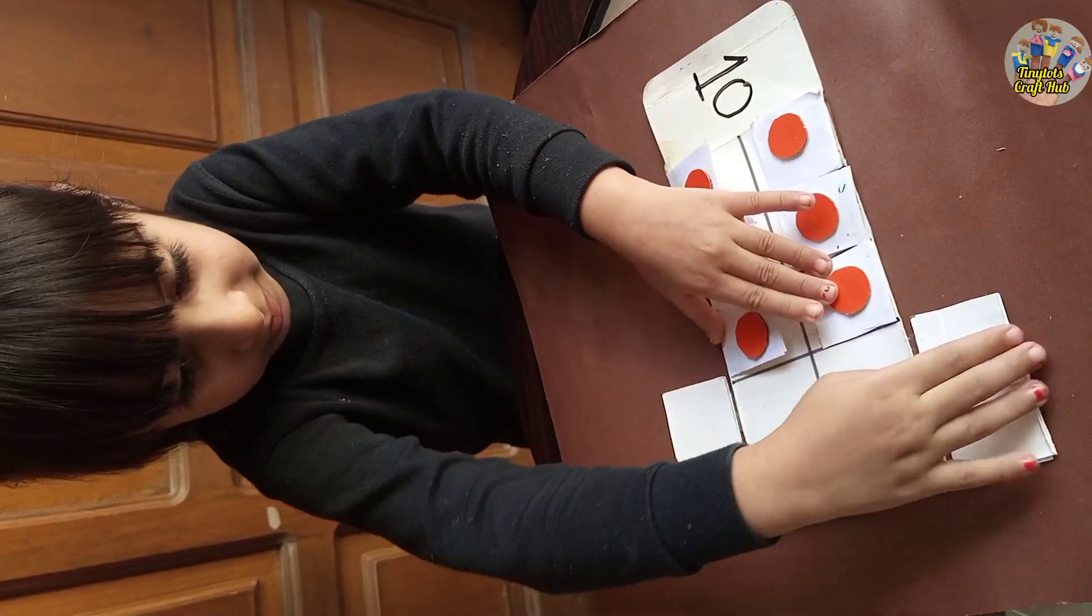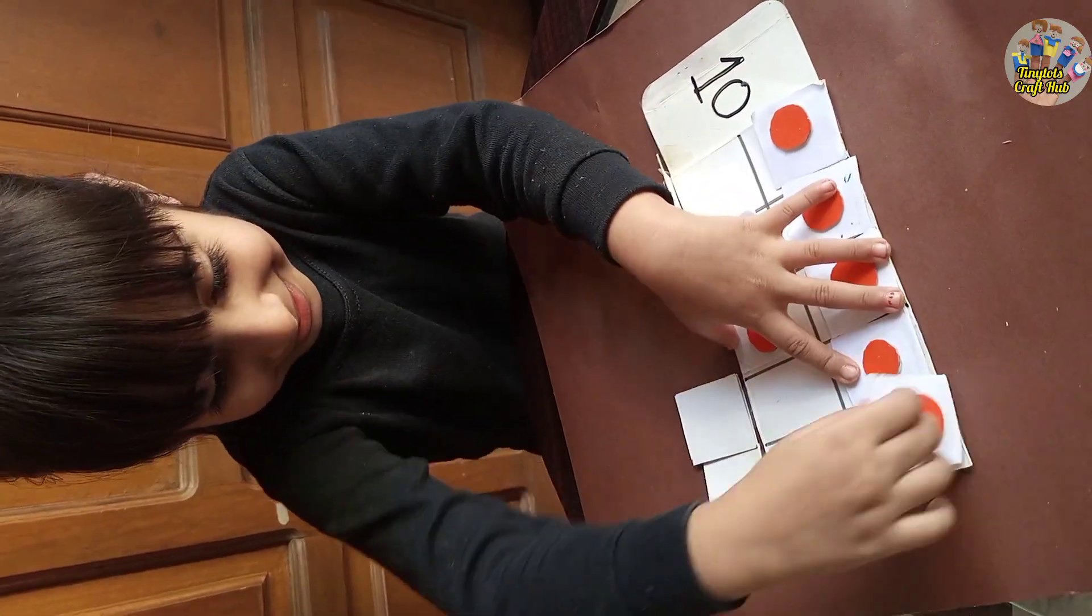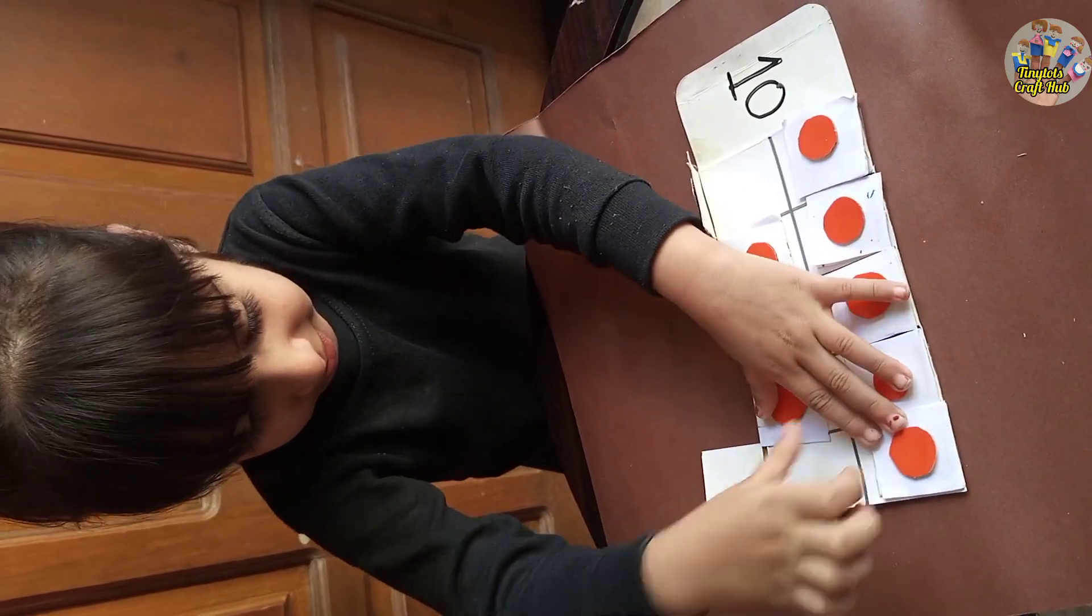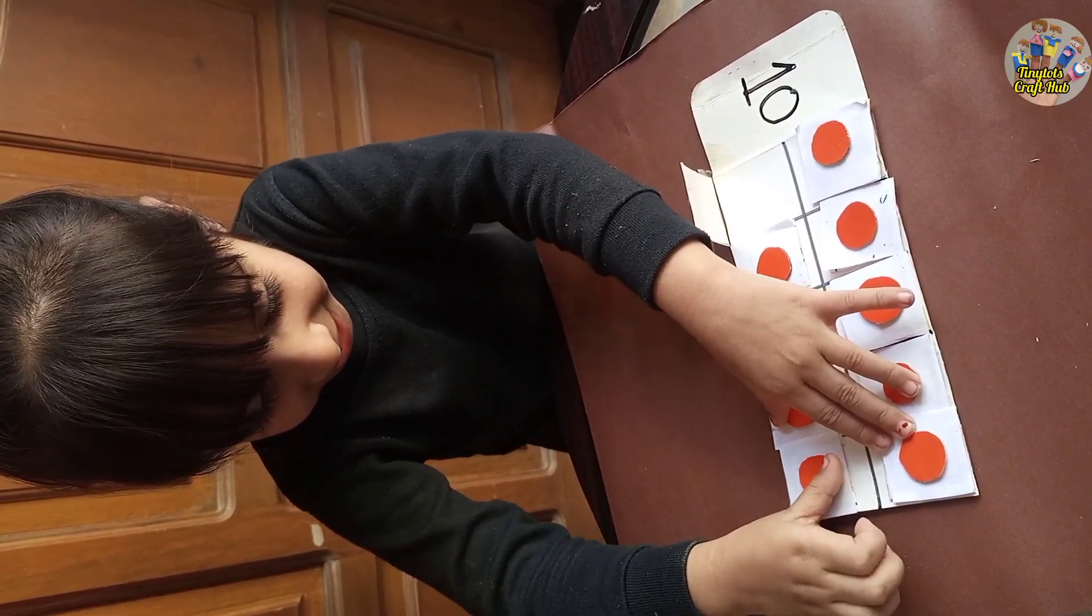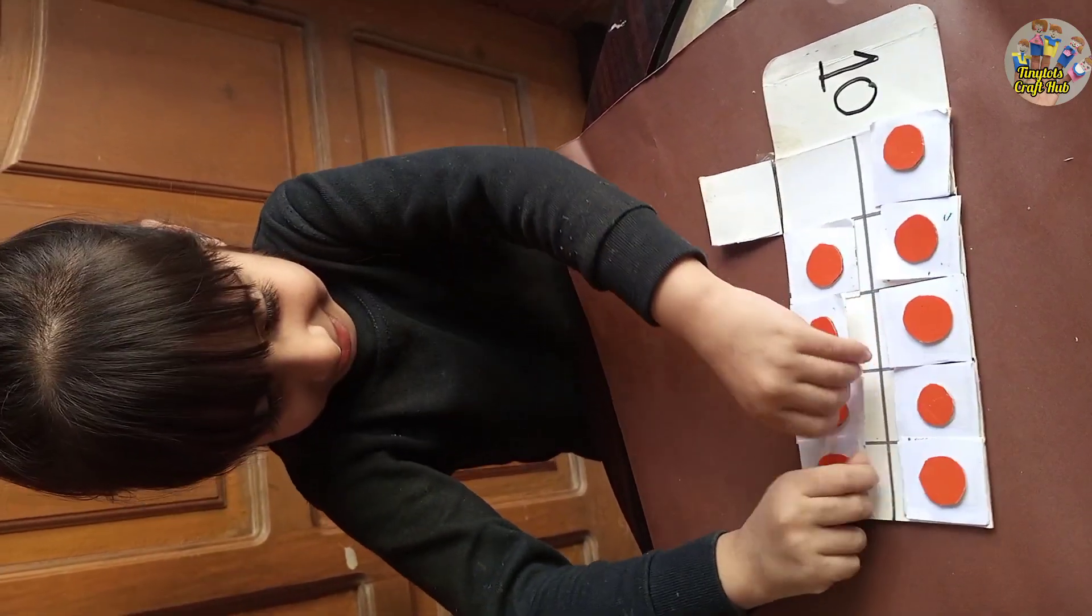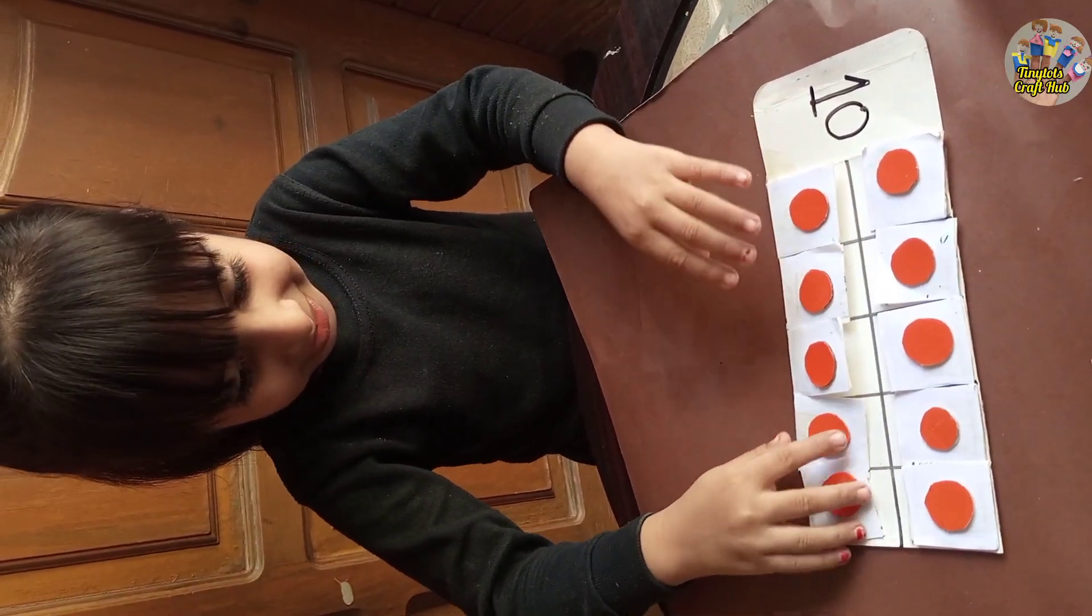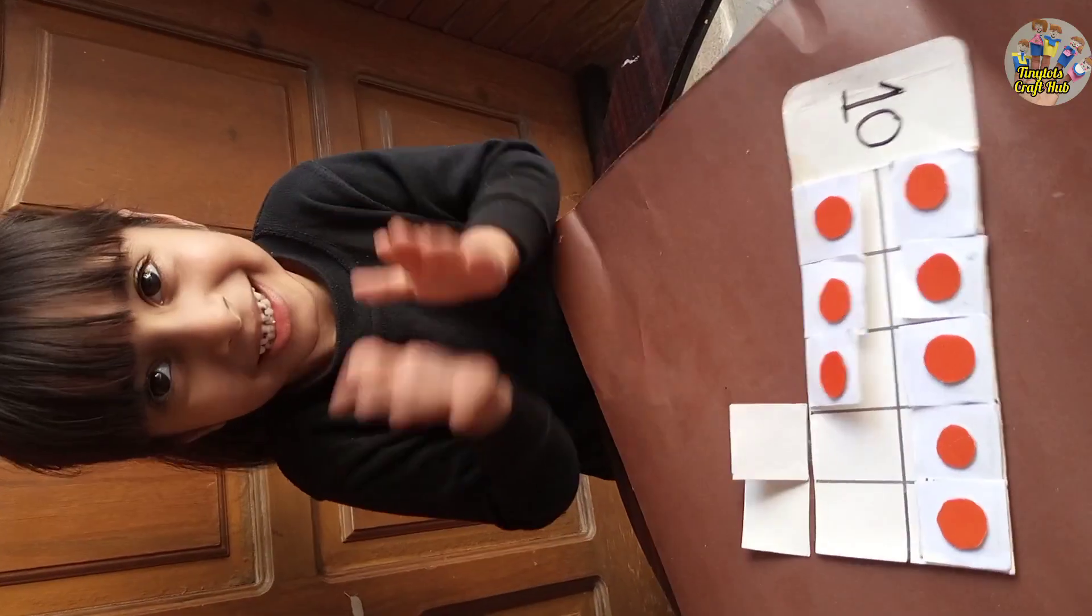Here is my daughter doing this activity. I have written ten, so she will count ten dots and flip all ten cards. You can see it's very helpful for your child to understand and learn counting. This is for beginners because they are learning. Thank you so much for watching, bye bye!